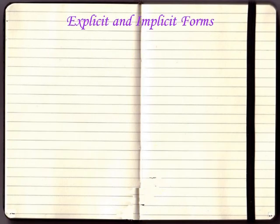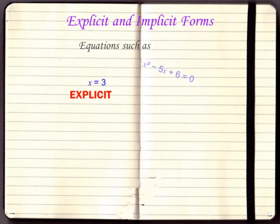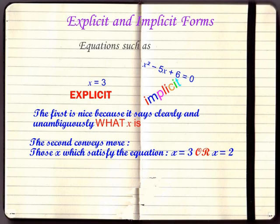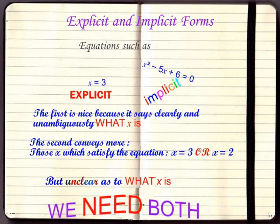At this point, we make a small digression to understand explicit and implicit forms. Equations like x equal to 3 we will call explicit. Equations like x square minus 5x plus 6 equal to 0 by contrast are called implicit. The first just says what x is. The second is more in the nature of a rule about x. We need both.